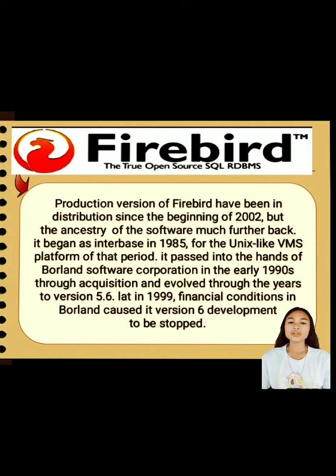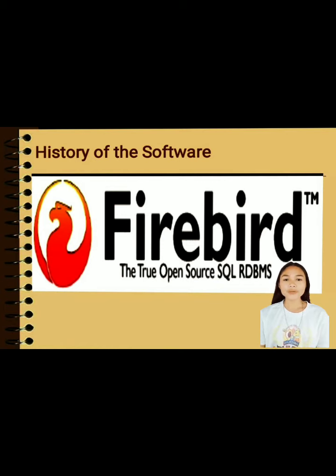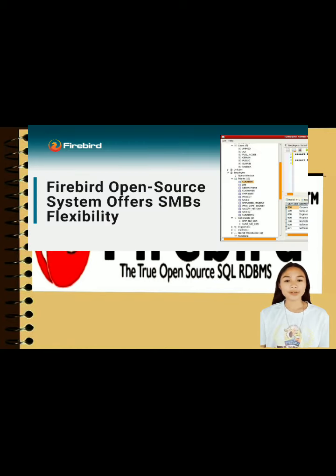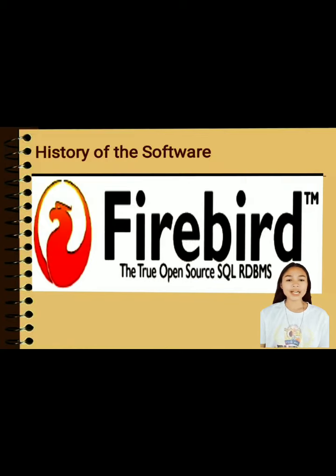Two Australian developers downloaded the newly released source code and set up the Firebird project at SourceForge, a huge server farm that provides sophisticated facilities free of charge to open source developers. Firebird 1.0 was released for Linux, Microsoft Windows, and Mac OS X on 11th March 2002, with ports to Solaris, FreeBSD 4, and HP-UX over the next two months.